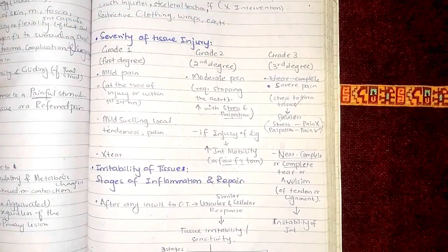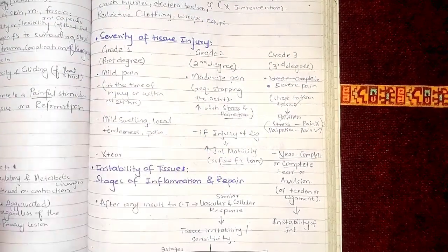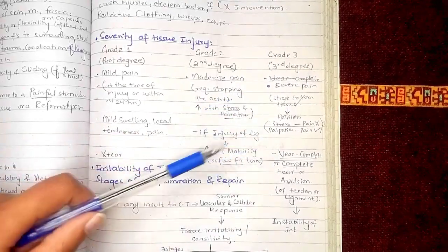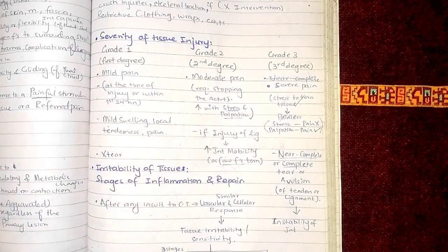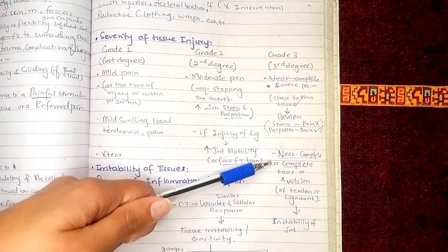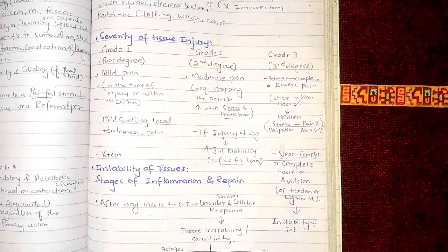In grade three, there is severe pain and this pain increases with palpation but not with stress. There is near complete or complete tear or avulsion of the tendon or the ligaments, meaning very few fibers would be intact and most would be torn. A complete or near complete tear of the ligament results in instability of the joint.